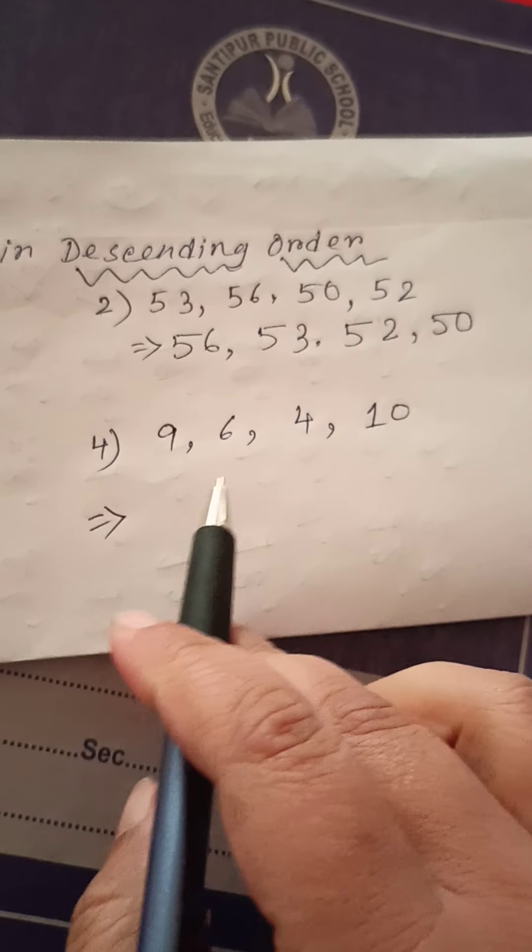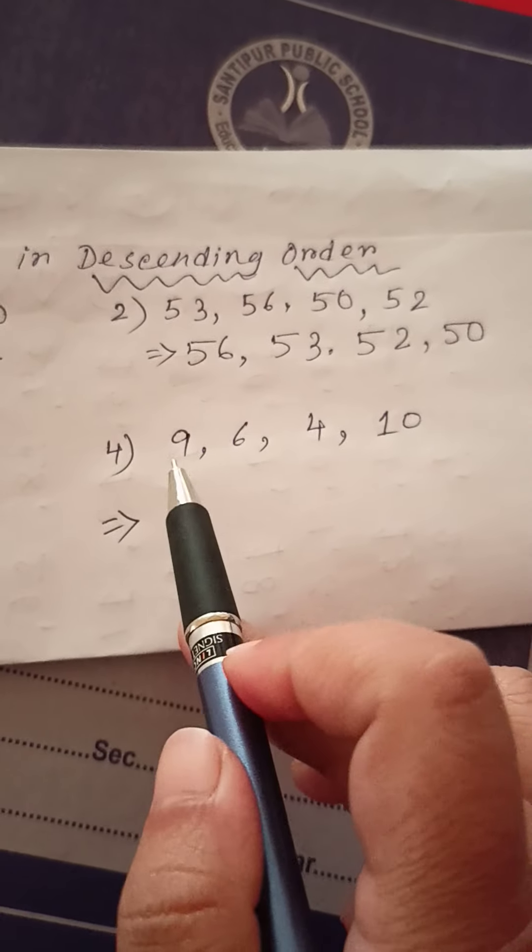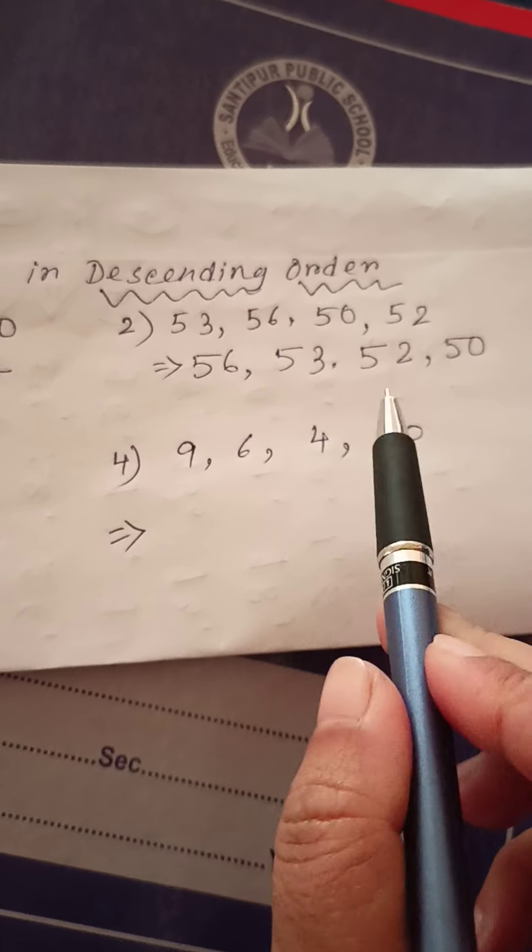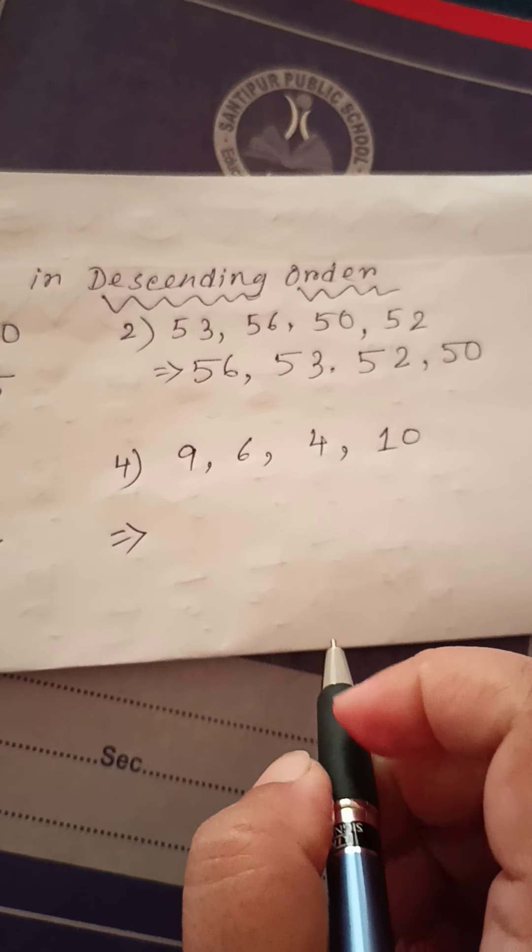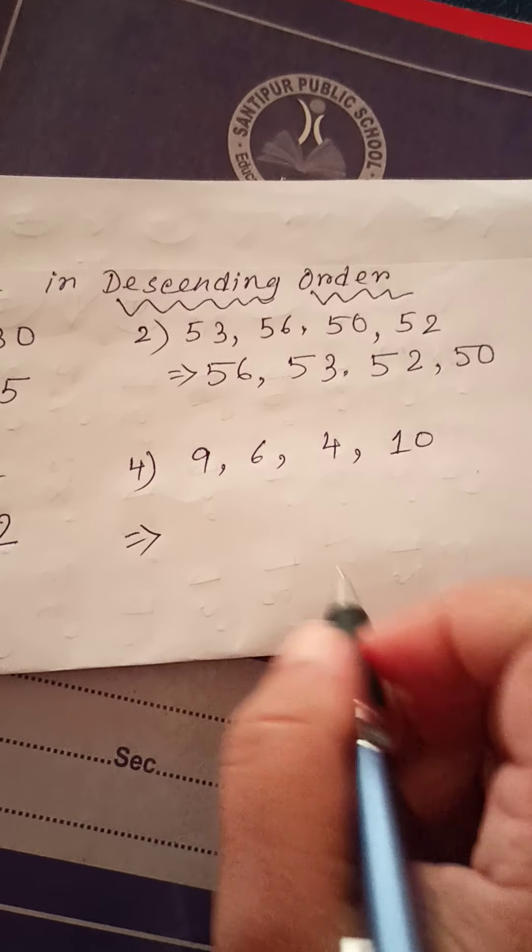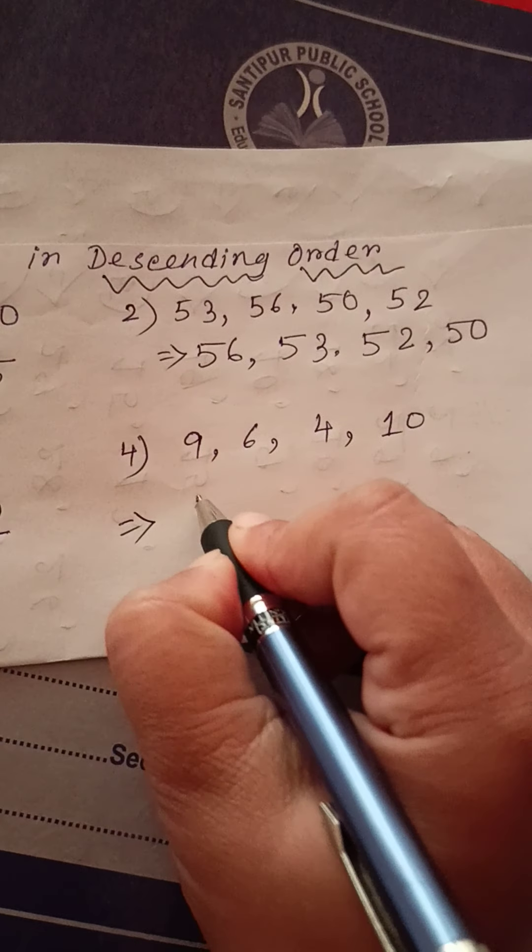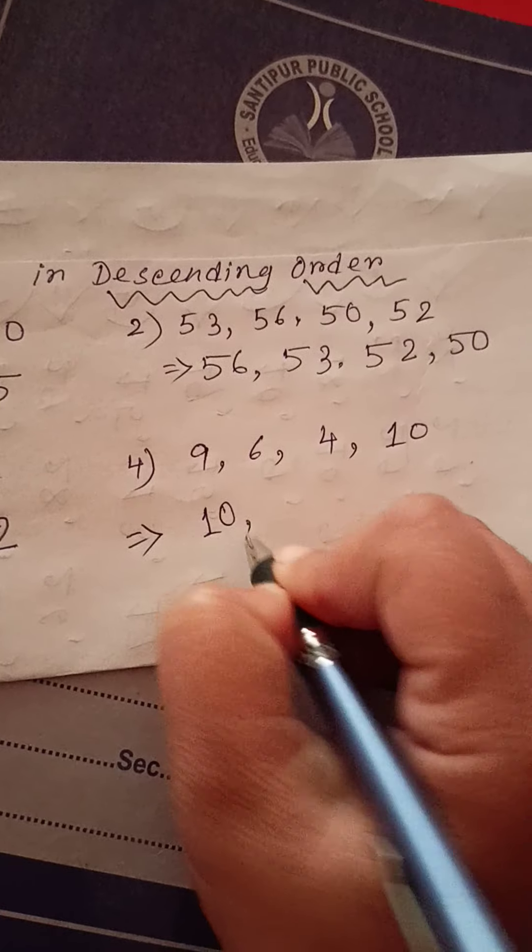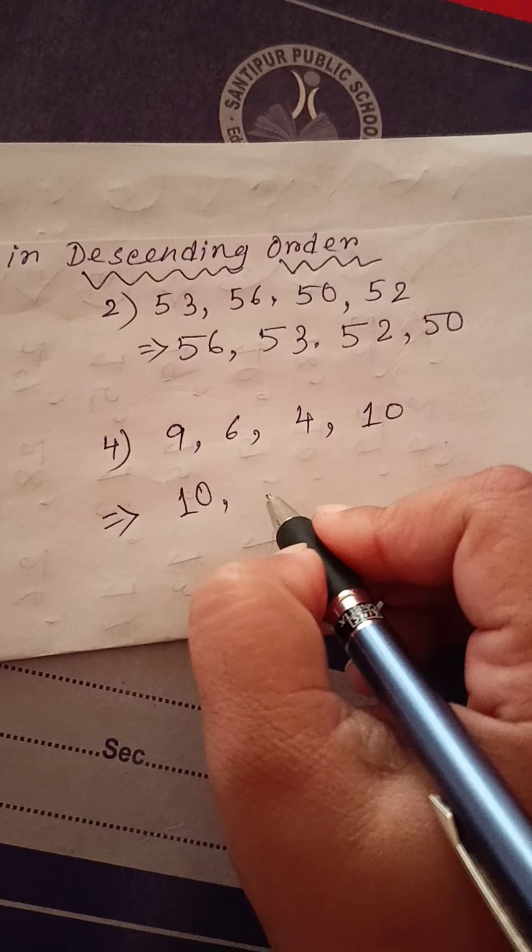Look. Here is four number. Nine, six, four, ten. So, which number will be, which number is the biggest number children? Yes. Ten.